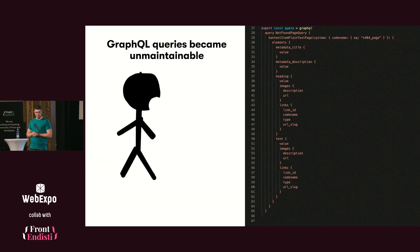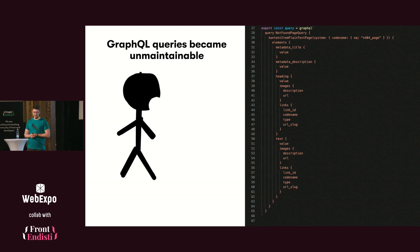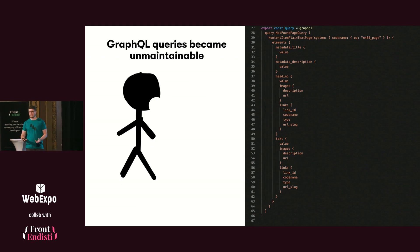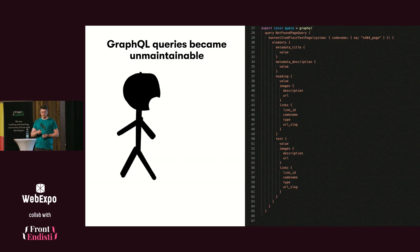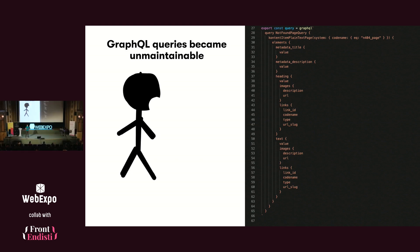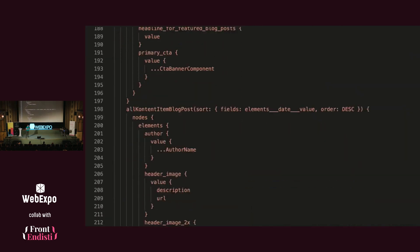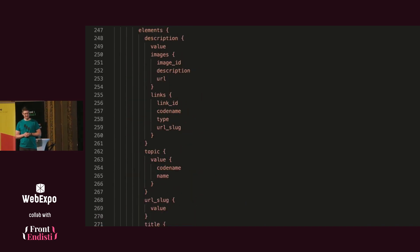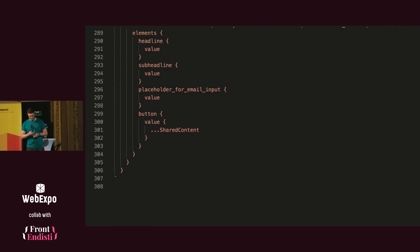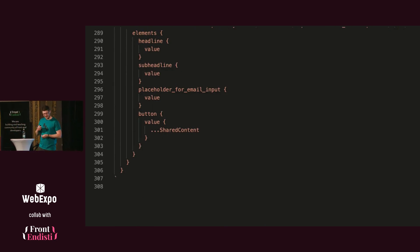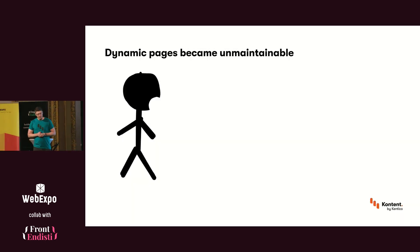GraphQL was a nice thing to have in the beginning, then it became totally unmaintainable. The only way to edit the GraphQL query, add something, or debug something was to copy the whole thing into GraphiQL, let it parse the query, edit it, and copy it back. You might think the query shown doesn't look that bad — but that's a 404 page, which is fairly simple. The blog post page GraphQL query was much worse — it gets worse and worse as the site grows.